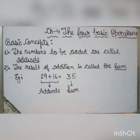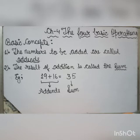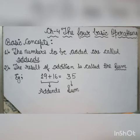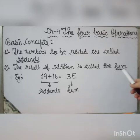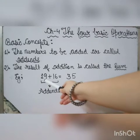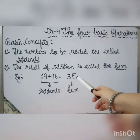The first basic concept: the numbers to be added are called addends. The second basic concept: the result of addition is called the sum. Here I have mentioned an example — 19 plus 16 is 35.